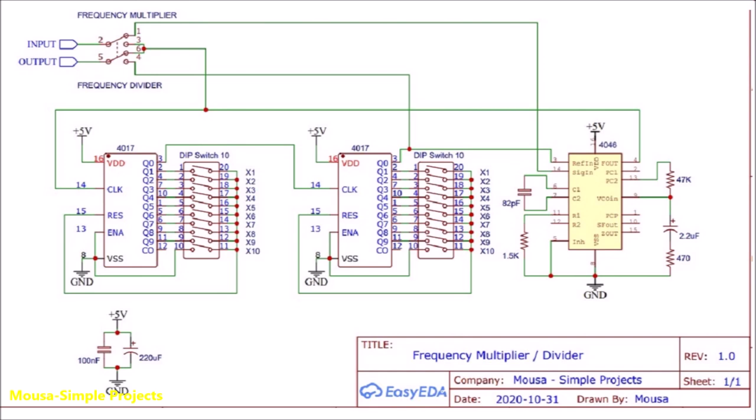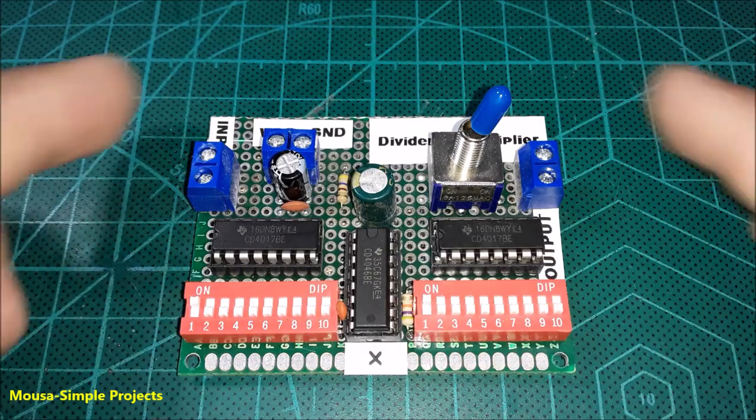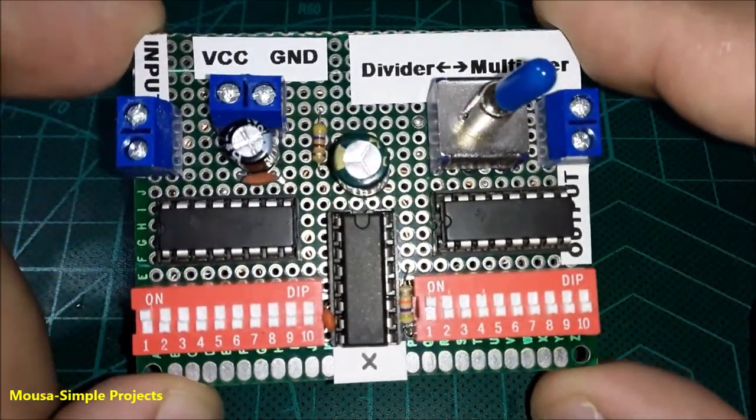This is my circuit. It has three ICs. By using these DIP switches, you can choose the ratio between output and input frequency. And from here, you can choose frequency divider or frequency multiplier. I soldered the components together and it's time to test. You have to multiply the value of these two DIP switches together.